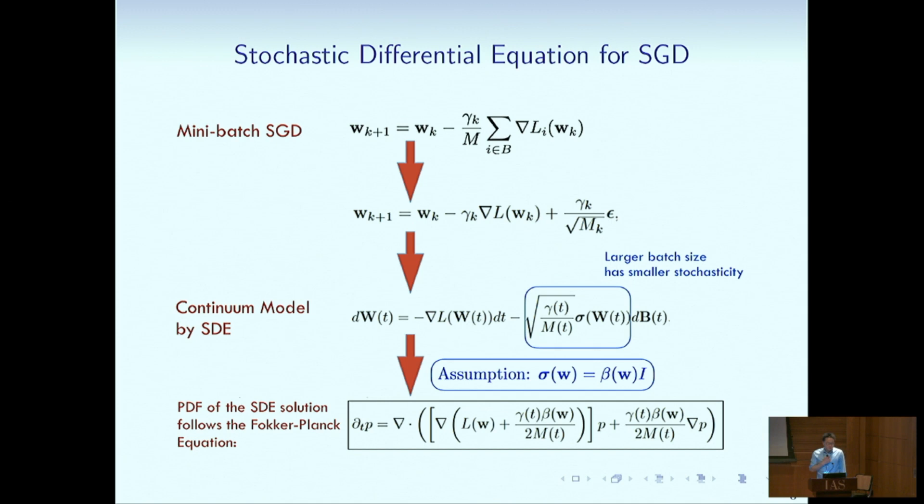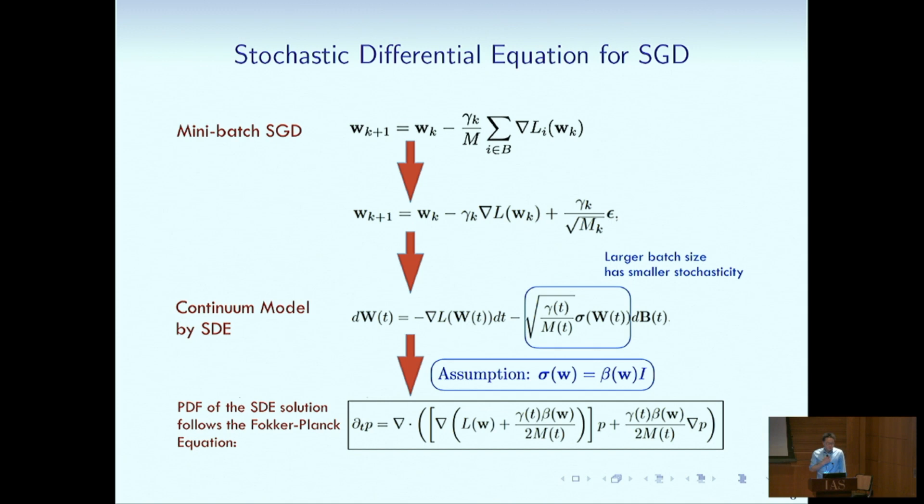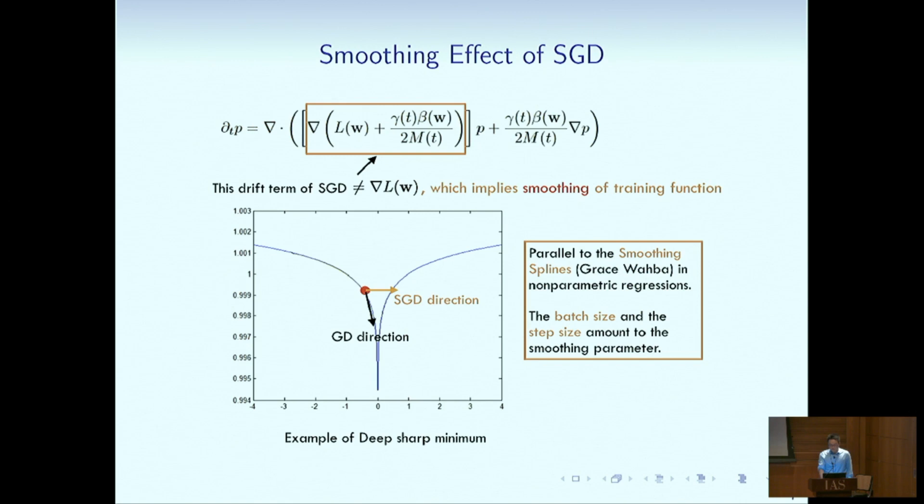The approach we take is studying the continuous system using the SDE. The benefit of the SDE modeling is we have complete information of the distribution. Specifically, we can study the PDF of the SDE solution, which is characterized by the Fokker-Planck nonlinear partial differential equation. For example, it is very clear that the drift term for the Fokker-Planck equation of the mini-batch SGD is not equal to the gradient of the risk. So that is explicit shows the regularization effect introduced by stochasticity in SGD.